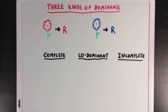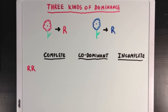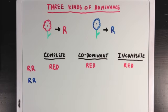Let's look at three different genotypes and the phenotypes you would see under each dominance pattern. Starting with the genotype of two red Rs — in all cases the flower petals will be red, since we only have red Rs in the genotype. Similarly, if the genotype has two blue Rs, then in all cases the flower petals will be blue.